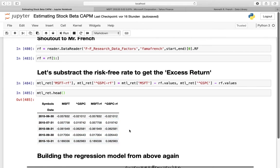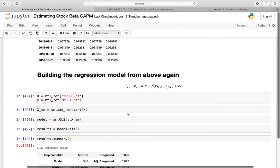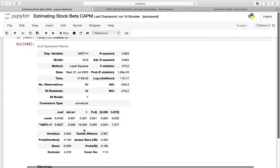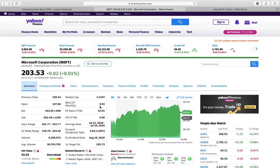Excess return is just the return minus the risk-free rate. With these excess returns I'm running my regression again. So my independent variable is the market excess return, this is this one here. And my dependent variable is the Microsoft excess return, this is this one here. Now I'm just doing the exact same thing as we did above. And then I'm getting those regression results here. And we are seeing that the beta with the excess returns is a bit higher here, 0.96. And what we could also conclude is that Yahoo seems to calculate the beta without taking the risk-free rate into consideration.